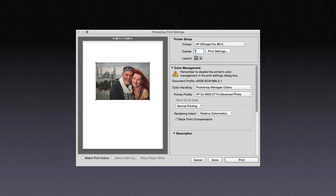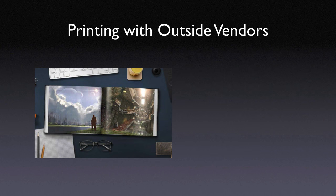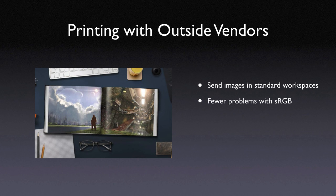Printer driver interfaces are notoriously confusing, involving lots of drop-down menus. If you can find a setting for color handling, make sure you choose to allow Photoshop to manage the colors. This gives you proper control over the choice of printer profiles according to the paper you're using. It often takes experimentation to figure out all the necessary settings, but once done you can save them as a preset. When dealing with outside vendors, make sure you supply files the way they want — communication is the key. General recommendations: make sure you have a profile attached to your images and have them in a standard workspace. If you're sending RGB files, you'll have fewer problems if they are sRGB, because most vendors' output defaults to sRGB.